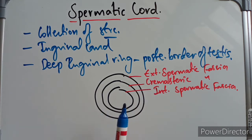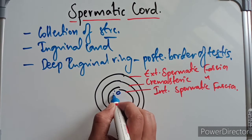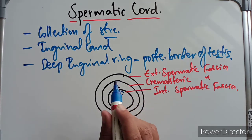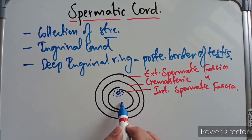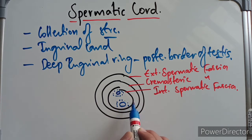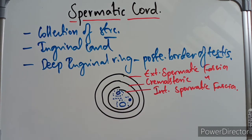Just inside the internal spermatic fascia there is the testicular artery, and around the testicular artery there are veins known as the pampiniform plexus. Then we have the ductus deferens, and around it also we have the pampiniform plexus of veins. Lateral to the ductus deferens we have a nerve called the genitofemoral nerve, and there is also the remains of the processus vaginalis.